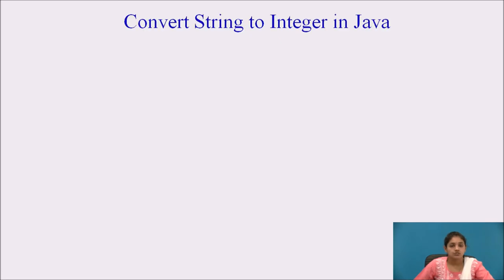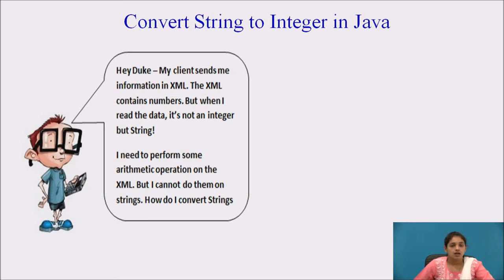Let us start converting strings into numbers, which is nothing but integers. There is one person asking: 'Hey Duke, my client sends me information in XML.' This person's client has sent him information in XML. He says XML contains numbers, but when he reads the data, it's not an integer but a string. He wants to perform some arithmetic operations on that XML data, but he's unable to do it. So he is asking his friend Duke for help to convert the strings into integer.